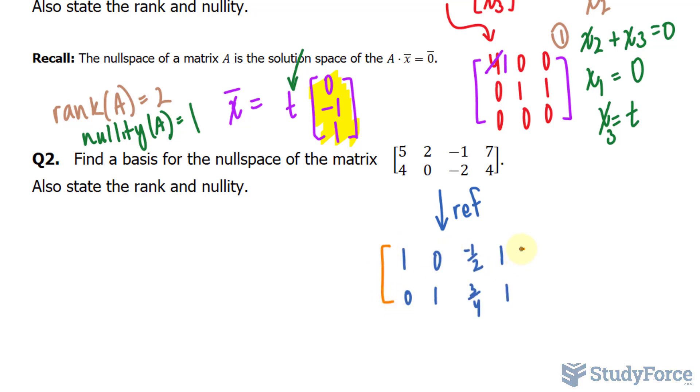Now once you have it looking like this, you can start the process of rewriting this in equation form. We have x sub 1 plus negative half x sub 3 plus x sub 4 is equal to 0. And for this row, that can be represented as x sub 2 plus 3 over 4 x sub 3 plus x sub 4 is equal to 0.